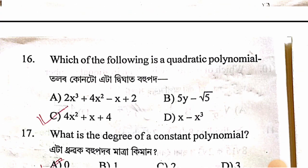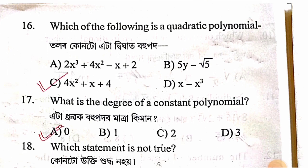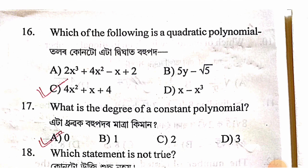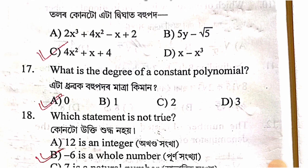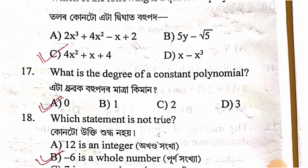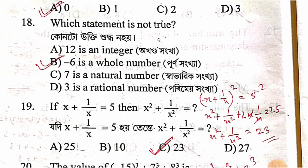Which of the following is a quadratic polynomial? The answer is option C: 4x² + x + 4, as it has degree 2.